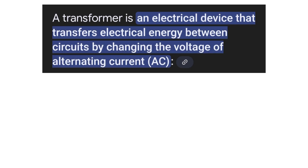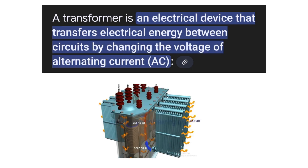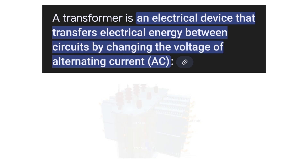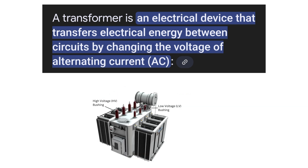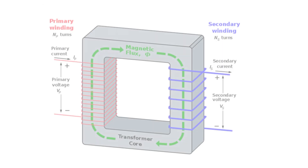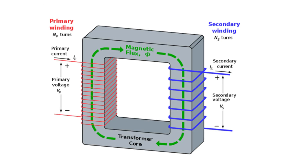A transformer is an electrical device that transfers electrical energy from one circuit to another circuit through electromagnetic induction. Transformers are used to change the voltage and current levels of alternating current while maintaining the same frequency throughout the circuit. That means the frequency will remain the same; only the current level and the voltage level will change.